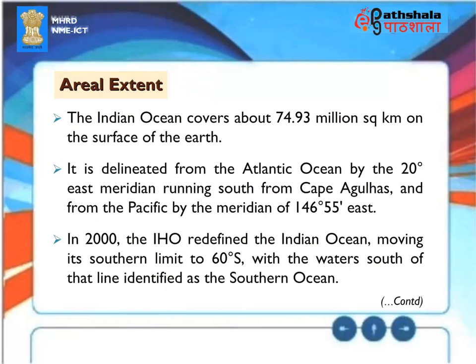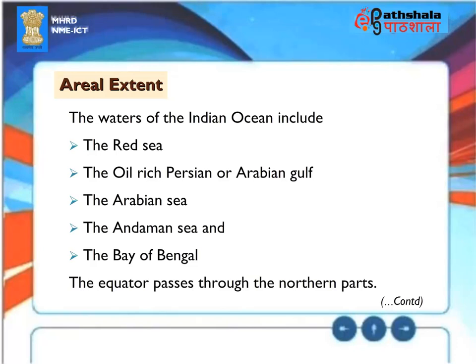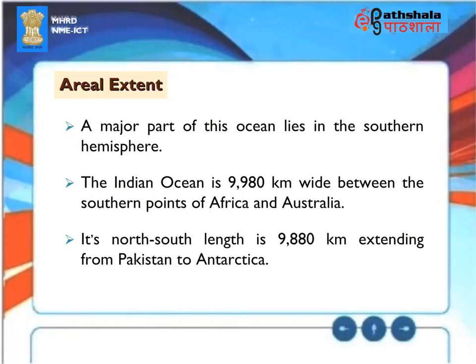Aerial extent. The Indian Ocean covers about 74.93 million square kilometers on the surface of the earth. It is delineated from the Atlantic Ocean by the 20-degree east meridian, running south from Cape Agulhas, and from the Pacific by the meridian of 146 degrees 55 minutes east. In 2000, the IHO redefined the Indian Ocean, moving its southern limit to 60 degrees south, with the waters south of that line identified as the Southern Ocean. The waters of the Indian Ocean include the Red Sea, the oil-rich Persian or Arabian Gulf, the Arabian Sea, the Andaman Sea, and the Bay of Bengal. The equator passes through the northern parts. A major part of this ocean lies in the southern hemisphere.